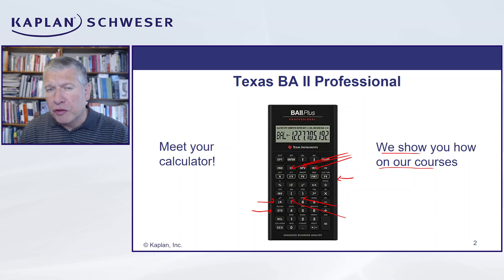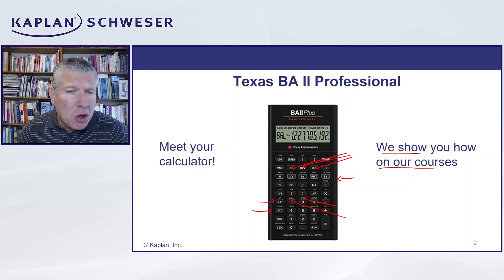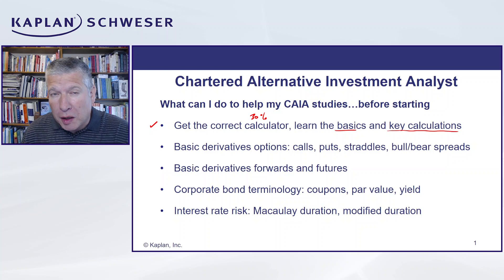All these things you can find on YouTube, and also in our Schweizer student portals, where we have a lot of help for you as well. That will make an enormous difference and save you a lot of time. By the way, the calculator we use for CHIA is the very same one we use for FRM and for CFA programs — very useful to know that.